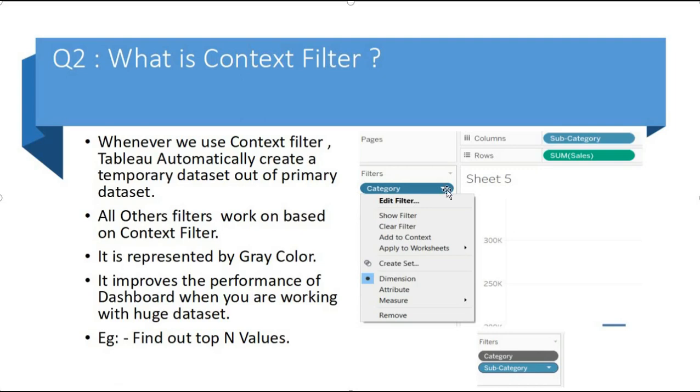As we can see here, when we right click on the category there is an option add to context filter. When we click on it, it becomes like this and it is represented by gray color. Let's move to the next question.